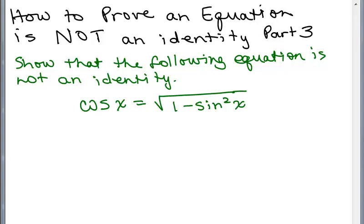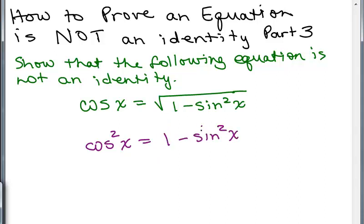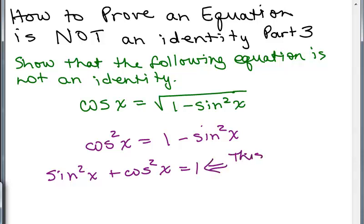This is not an identity, and we're being asked to show that. Some people look at this and think it is an identity because they might think, I'm just going to square both sides. When you square both sides you get cosine squared X on the left, and 1 minus sine squared X on the right. Then if you add sine squared X to both sides, you have sine squared X plus cosine squared X equals 1, and that is an identity.